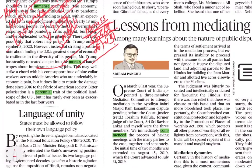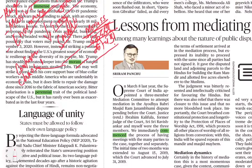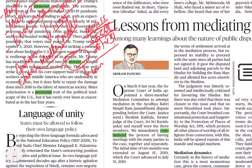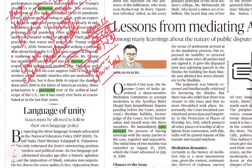Similar words in English for morass: confusion, chaos, and muddle. Opposite words: unmoving और painless.